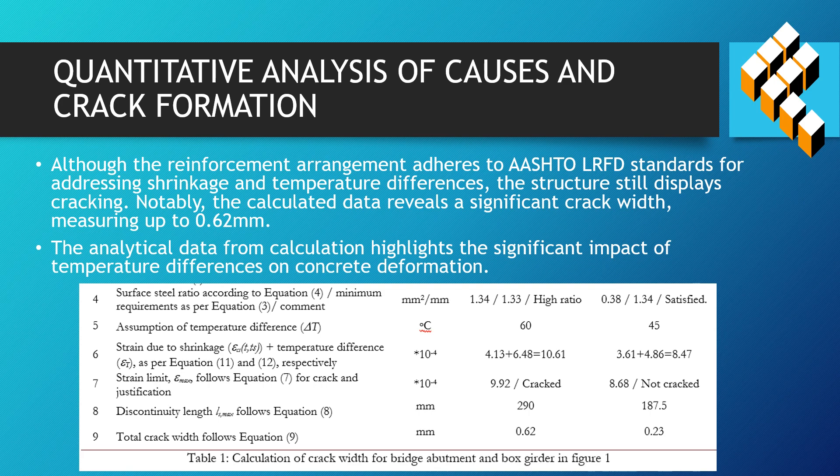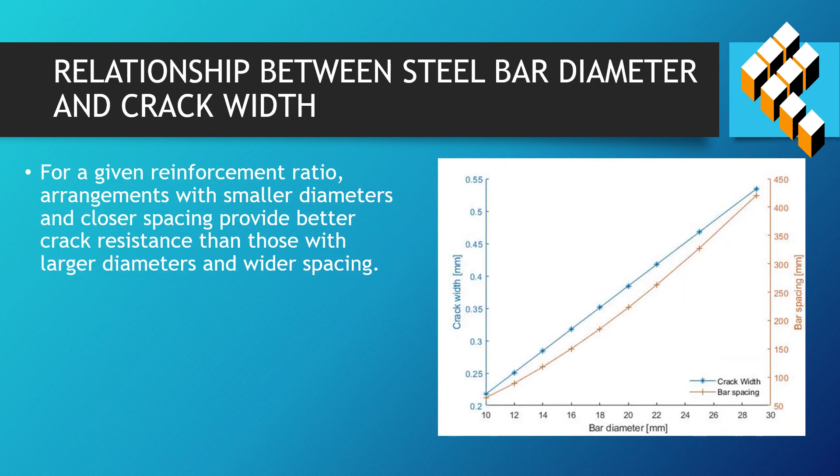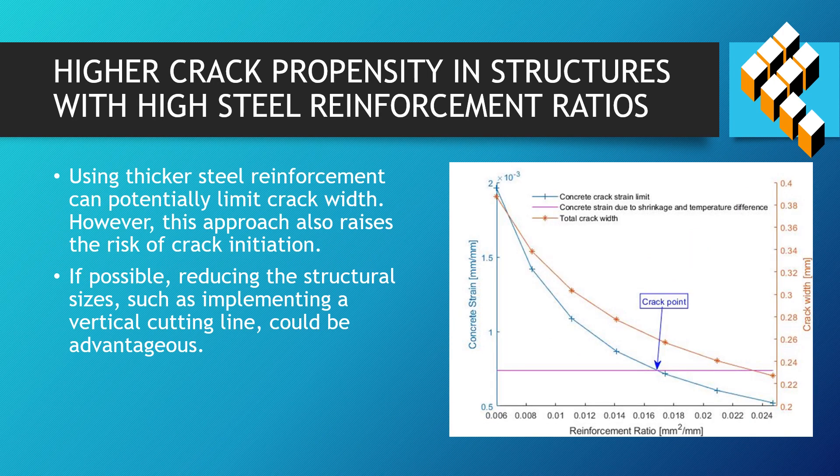Notably, the calculated data reveals a significant crack width measuring up to 0.62 mm. For a given reinforcement ratio, arrangements with smaller diameters and closer spacing provide better crack resistance than those with larger diameters and wider spacing. Using thicker steel reinforcement can potentially limit crack width; however, this approach also raises the risk of crack initiation.